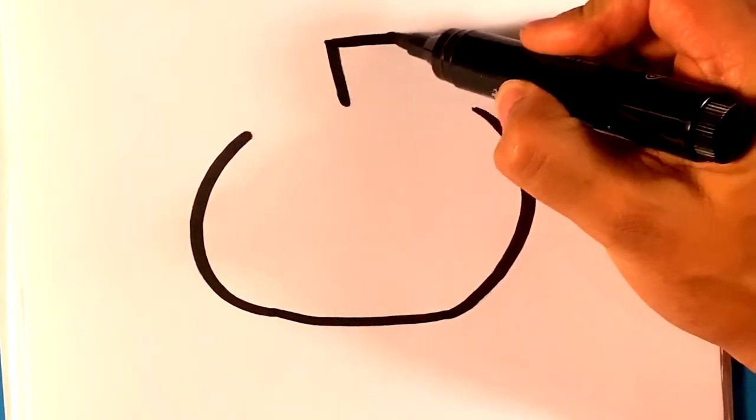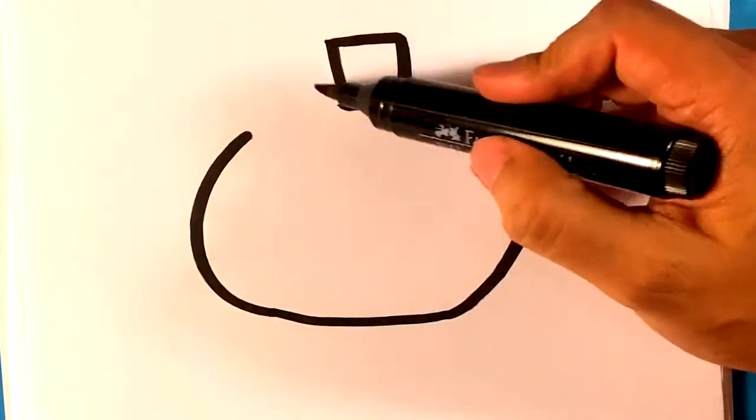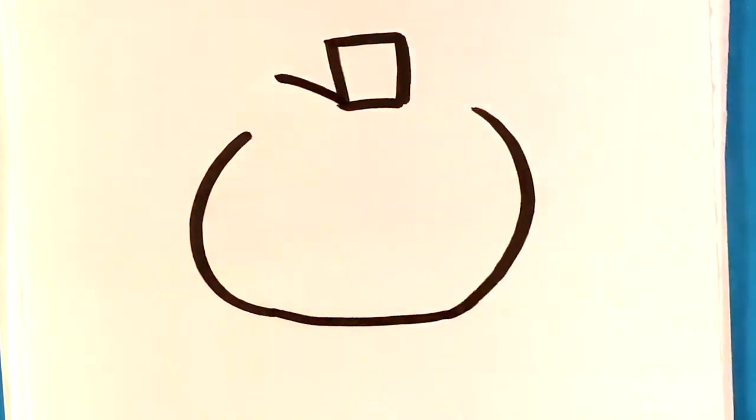I'm going to draw a stem that's relatively thick. It's basically going to be a box. Throw a line out, like so.